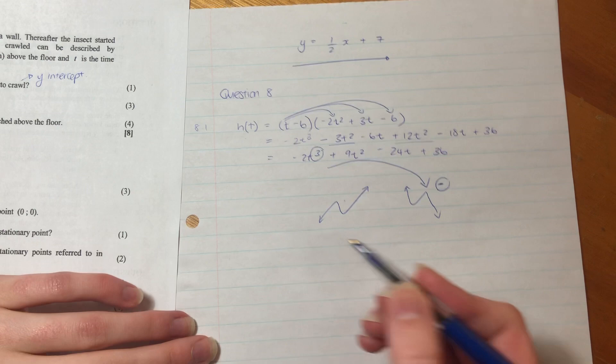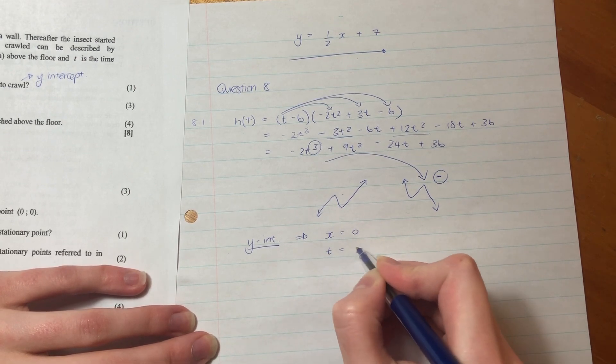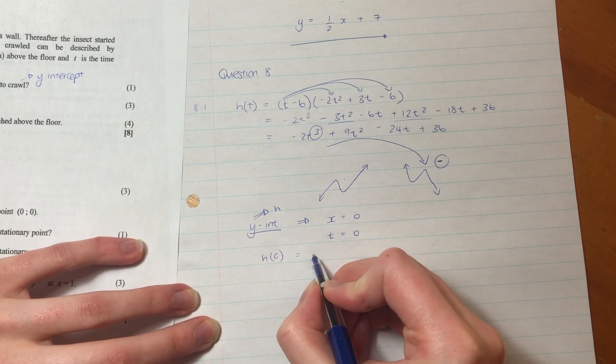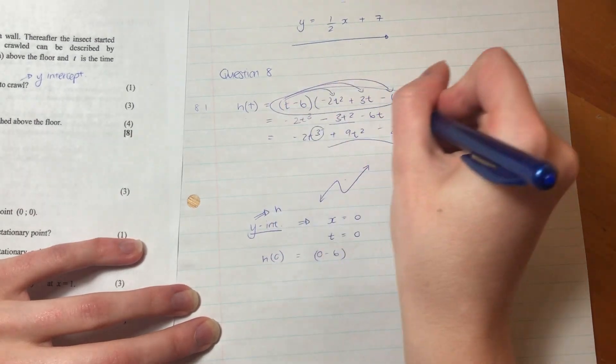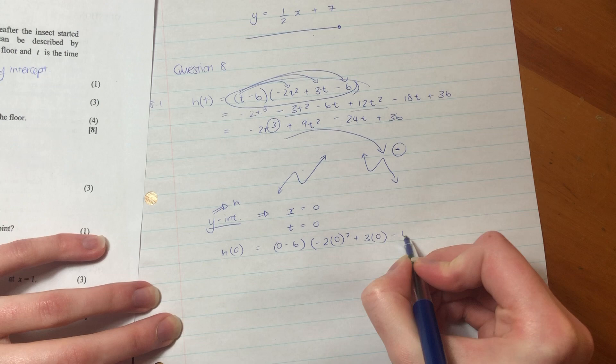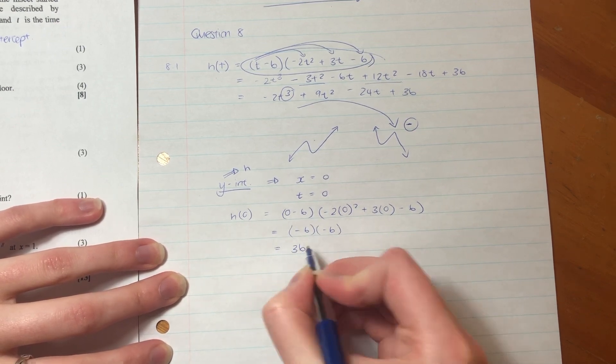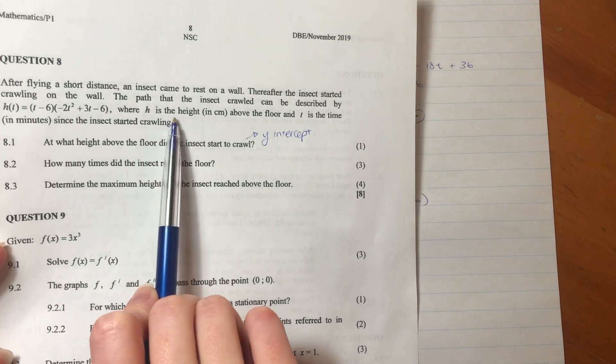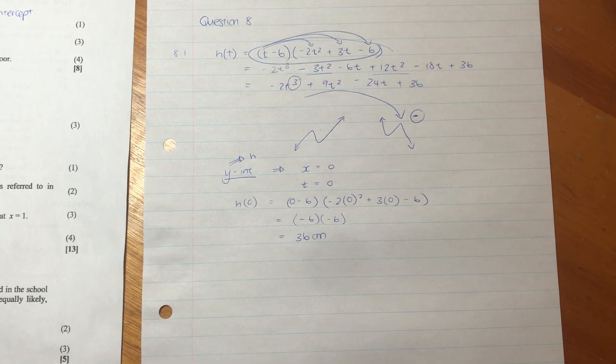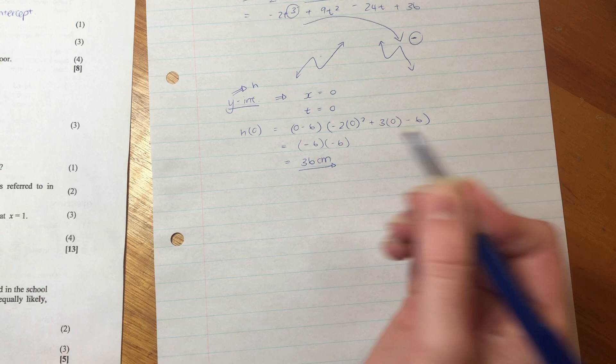But for 8.1, basically what you're saying is we want the y-intercept. When we want the y-intercept, what do we do? We set x equal to 0. In this case, it's t equal to 0 and y is actually h. So if we set t equal to 0, h of 0 equals, I'm just going to go back into our original. And then I'm going to be 0 squared plus 3, 0 minus 6. So then it's going to be negative 6 multiplied by negative 6, which equals 36. But they've given us here the height in centimeters. It's important to put that in because it indicates that we actually understand the details of the question. So that's 36 centimeters.